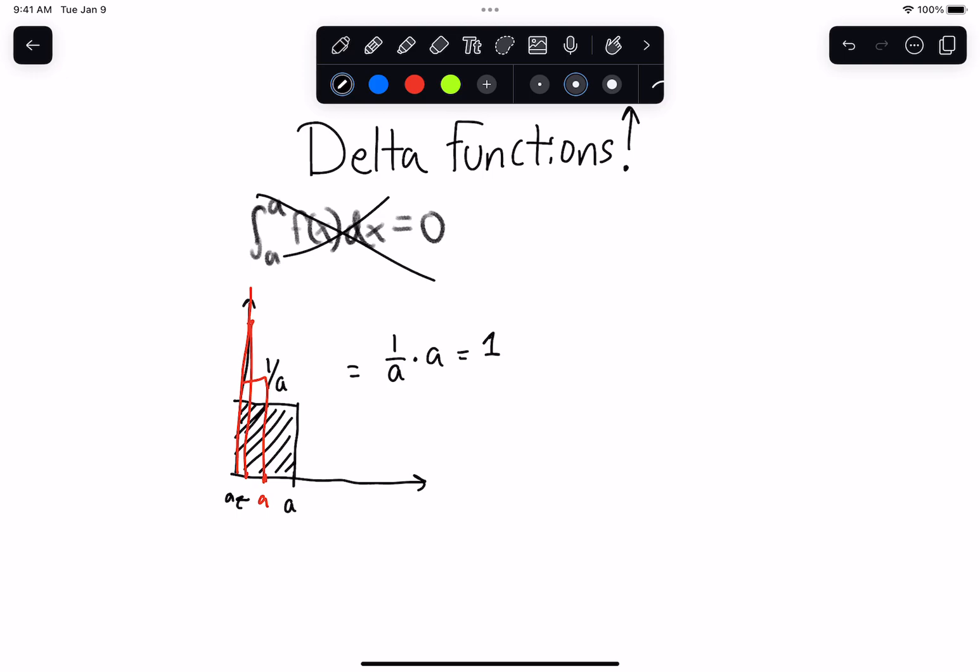We basically want a delta function to satisfy the equation, the integral from 0 minus to 0 plus. So you probably haven't seen this notation before. But what I'm saying is the integral from the smallest point over from the left of 0 to the smallest point over from the right of 0 over my function delta of x dx equals 1.